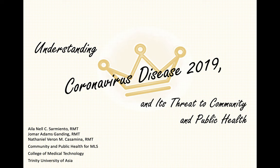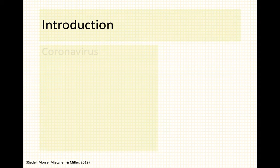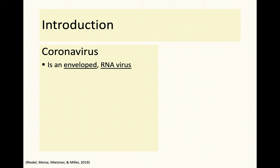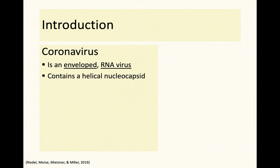Your coronavirus — generally these are envelope viruses and they are RNA viruses. When we say envelope viruses, there are two types of viruses according to their coating: it can be an envelope virus or a naked virus. The envelope virus obviously has its own lipid bilayer or coating. Naked viruses do not have your envelope — technically it's just your nucleocapsid, your genetic material, and some important proteins. Your coronavirus contains a helical nucleocapsid.